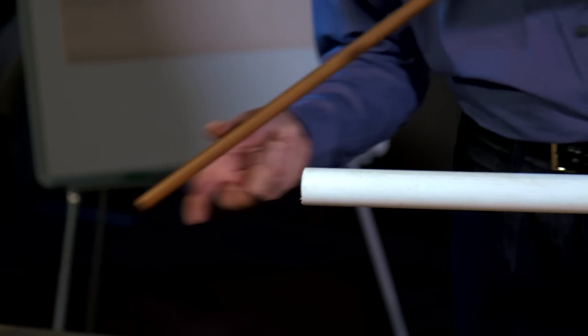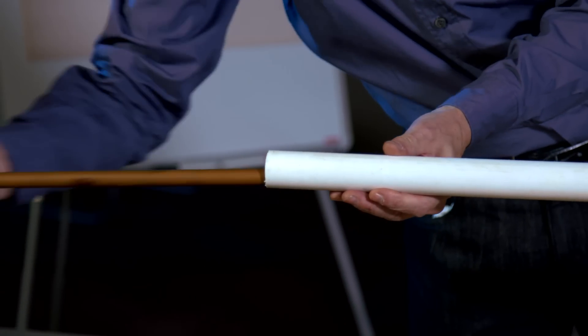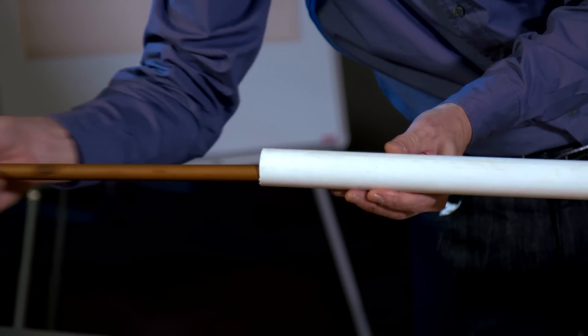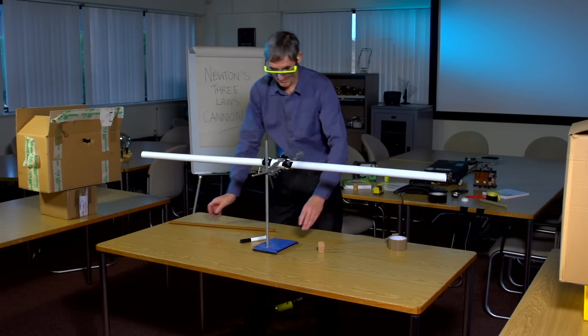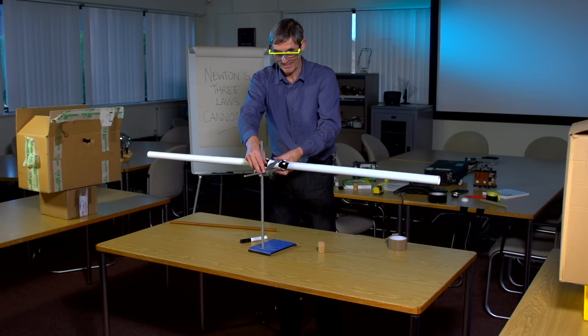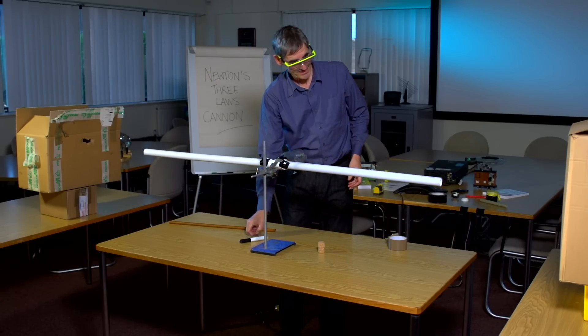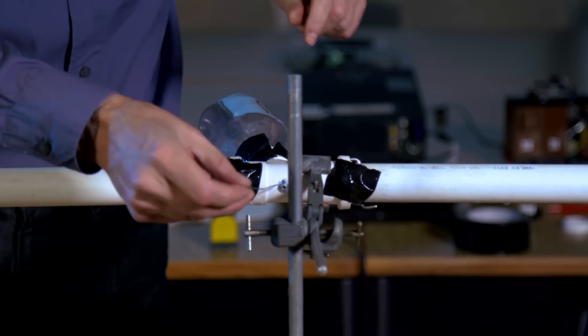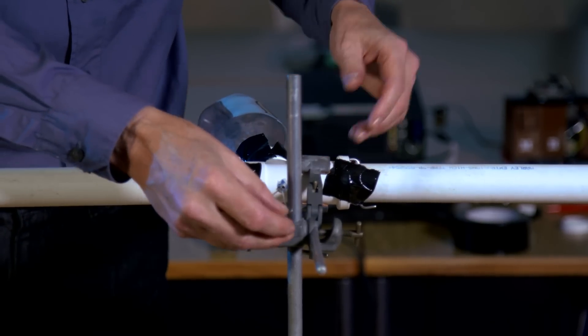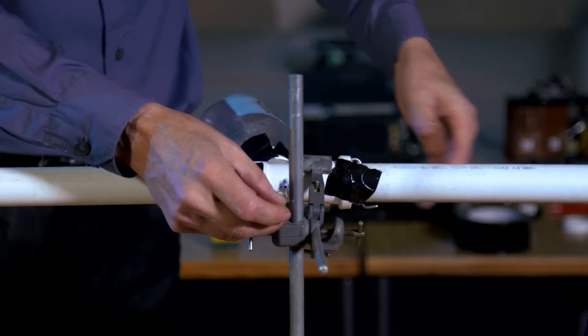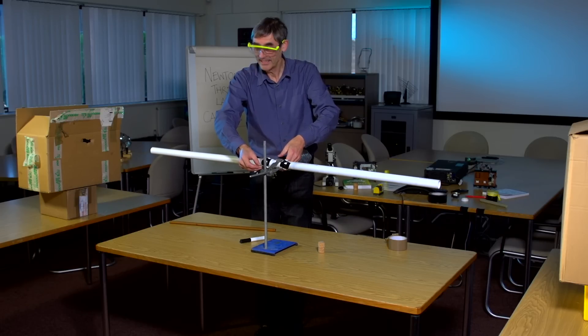Then we're going to aim it carefully so it definitely hits the stop boxes in both directions. When we're ready, we can put the firing pin in here and release the compressed air, firing the projectiles in opposite directions like this.